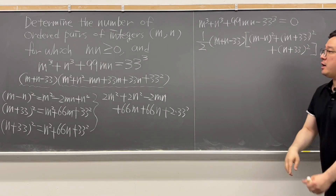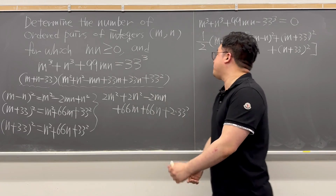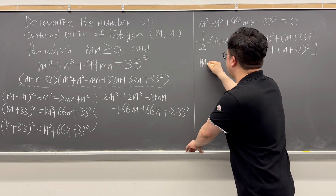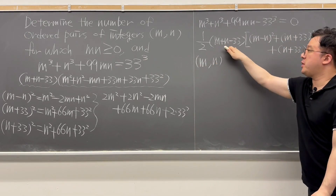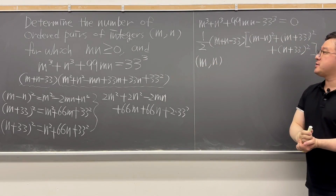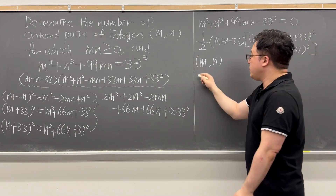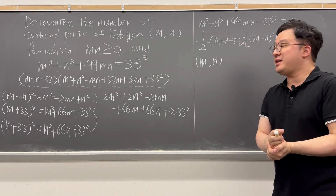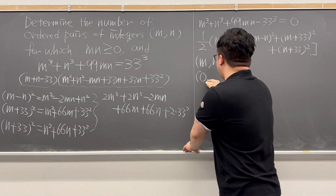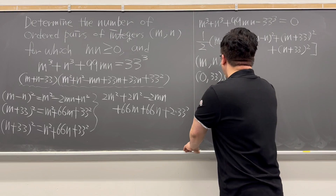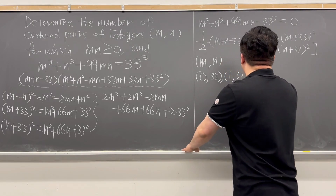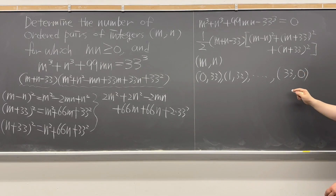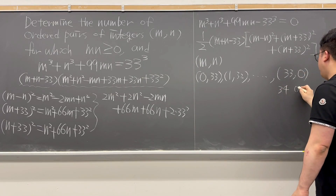How many ordered pairs of m and n satisfy our conditions? First, if the first factor equals 0, then m plus n equals 33. Since m times n must be greater than or equal to 0, we can go from (0, 33) and (1, 32) all the way up to (33, 0). That gives us 34 ordered pairs so far.